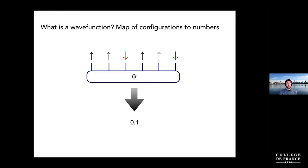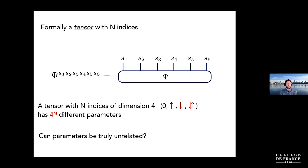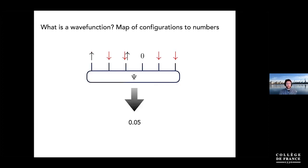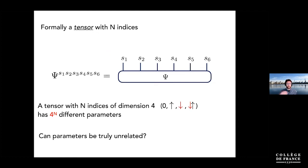We can think of a wave function as a map that takes in configurations and spits out numbers — for every configuration we assign a number, possibly negative or complex, and we square it to get the probability. Viewing it this way helps us think of the wave function amplitudes as a tensor with N indices. When you have a tensor of this size, it has exponentially many parameters: N indices each of dimension four gives four-to-the-N parameters.